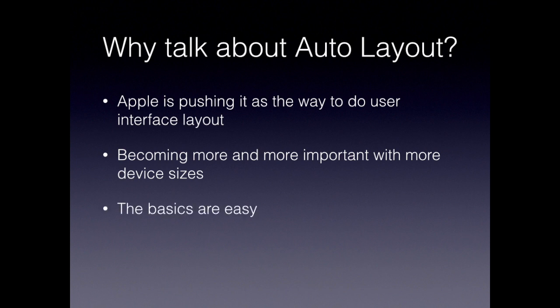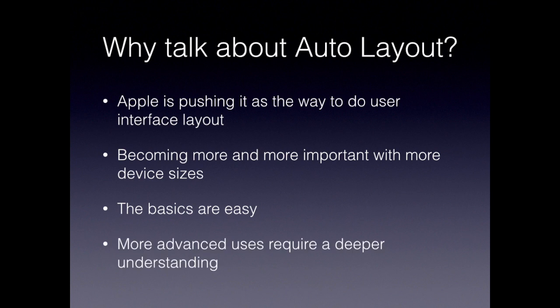The basics of auto layout are kind of easy. You might have watched a WWDC session and Apple makes it look like, hey, you just set up some constraints and everything's cool. But the reality is that the more advanced use cases aren't so easy - they require a deeper understanding of how auto layout actually works. I started a new project with auto layout about a year ago, thought it was straightforward, but kept running into issues and always looking things up on Stack Overflow. Hopefully we can learn from some of my mistakes.